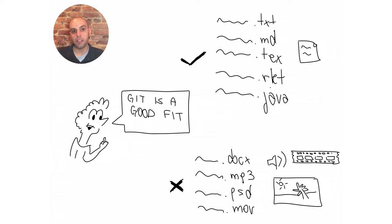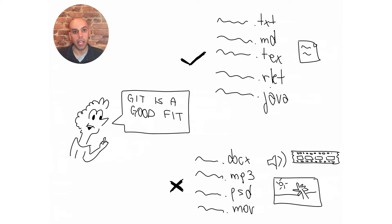On the other hand, if your project is based on images and movies and sound, then Git may not be ideal because those files are opaque. Git cannot tell the difference between two versions of the same file. It can only store the whole file again and again and you're left to your own devices to find the differences and who contributed what.